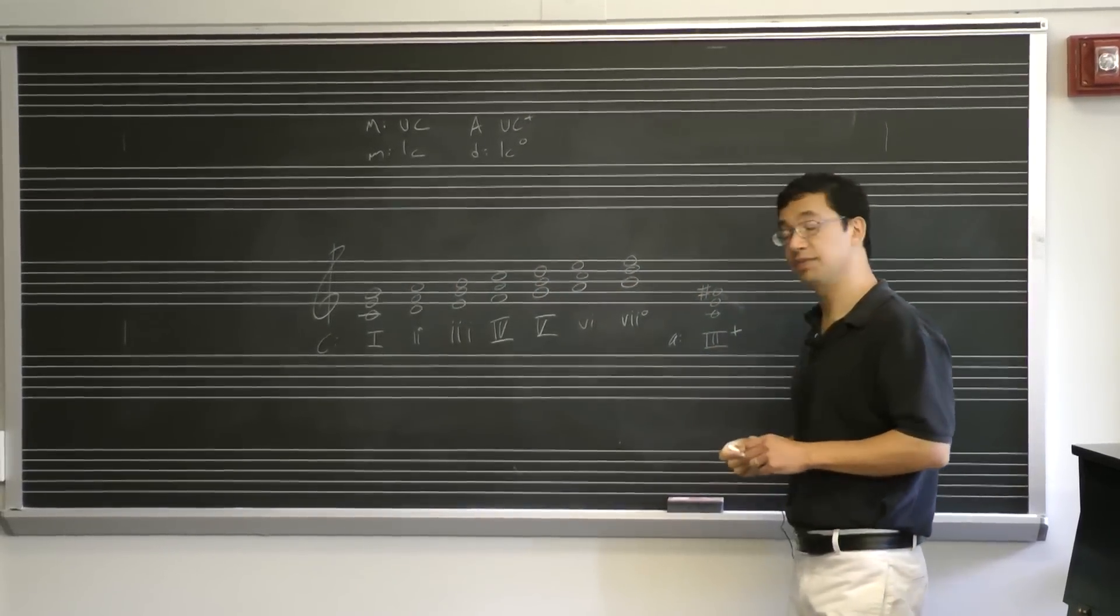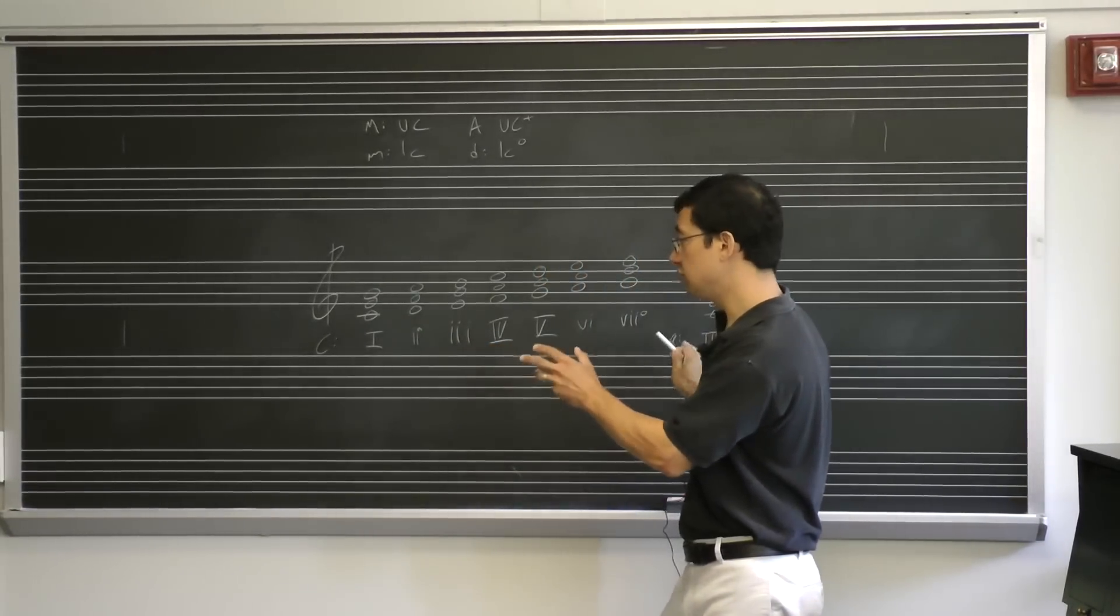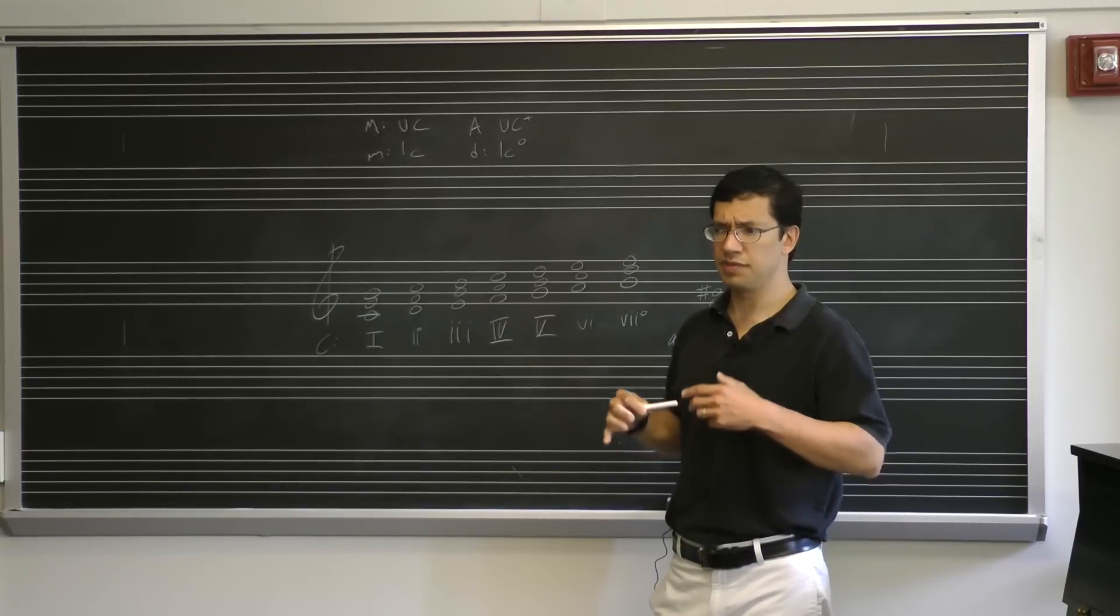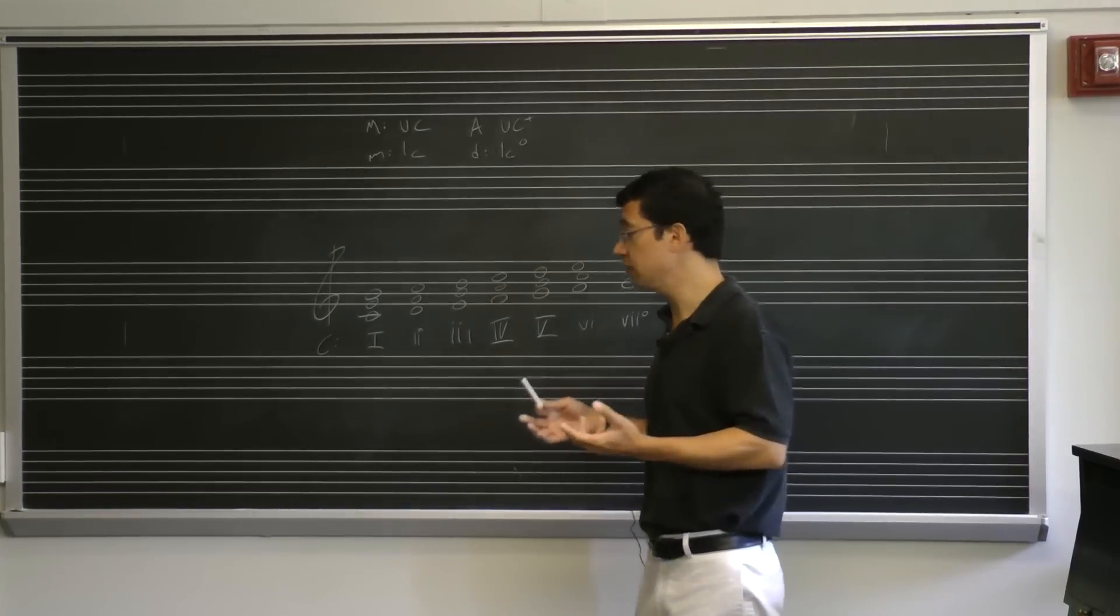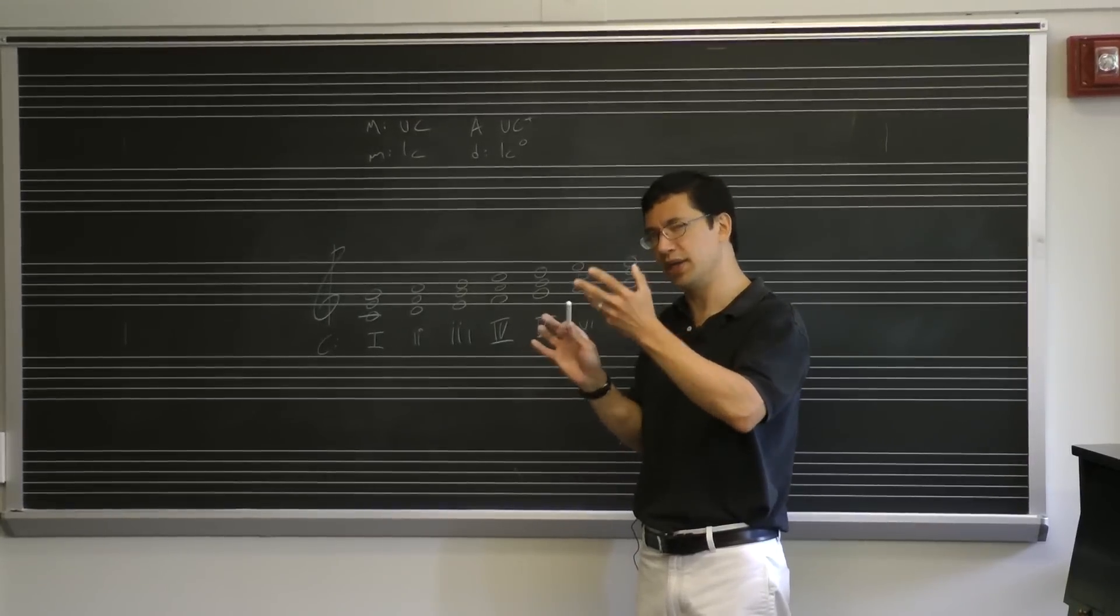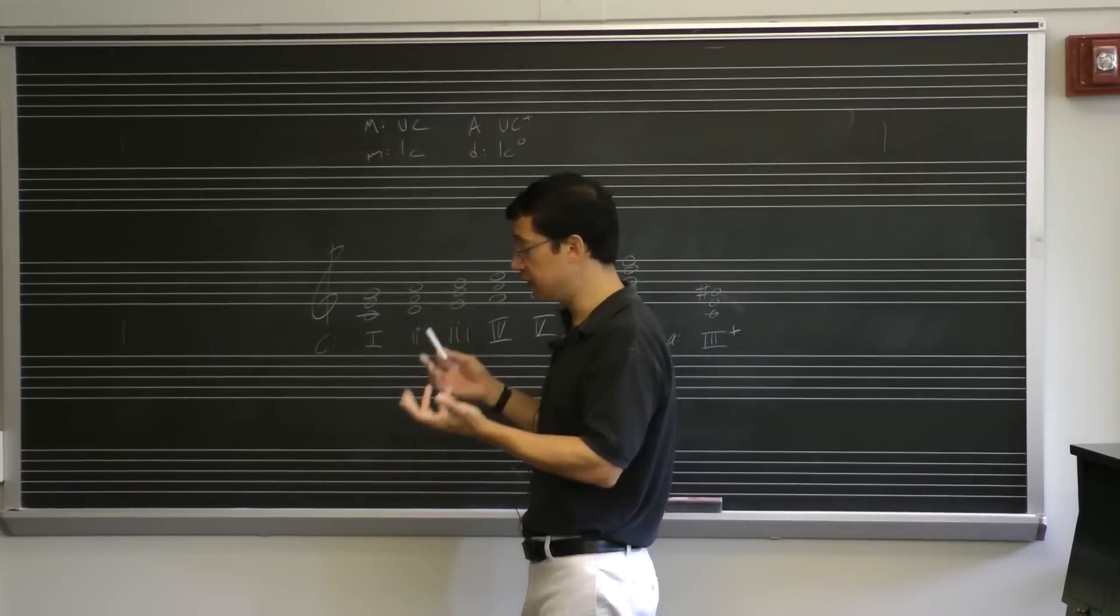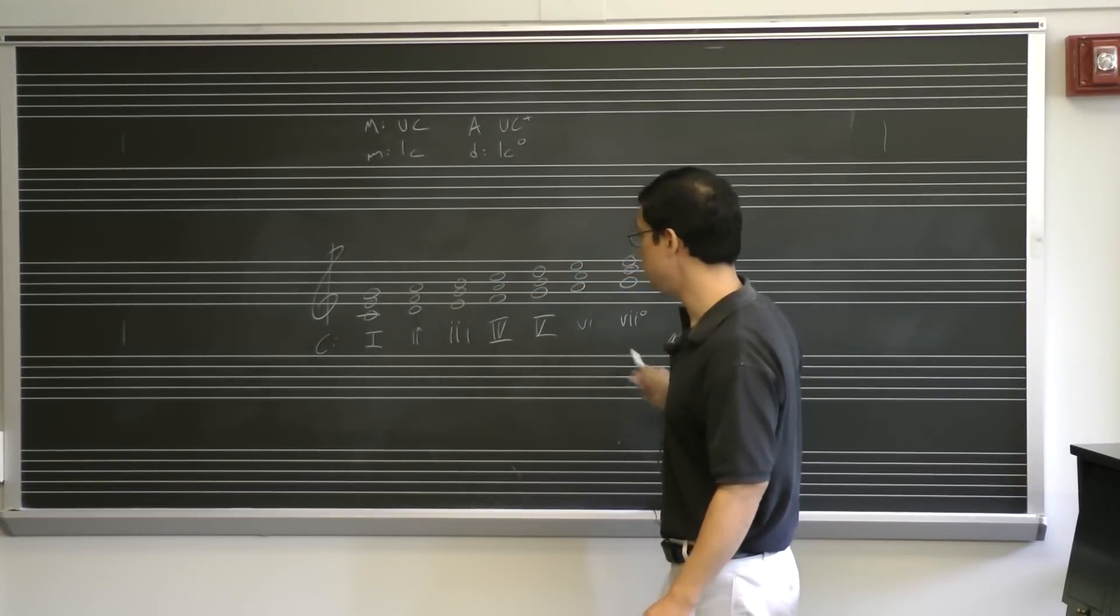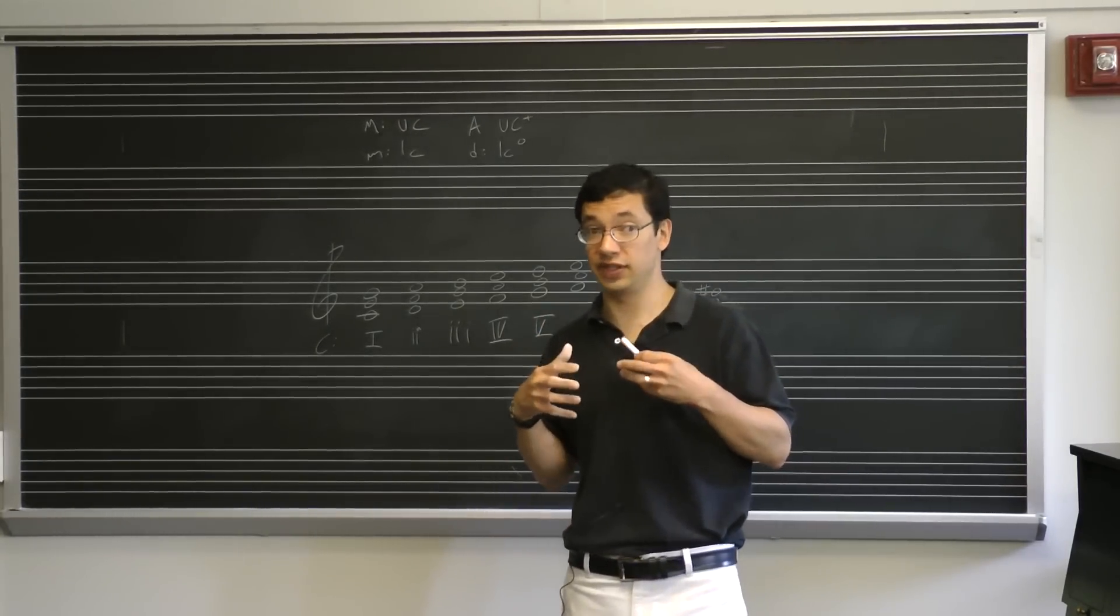This actually points to something very important. This system, these Roman numerals, are often considered one of the main steps in moving toward somewhat more advanced music theory and understanding of harmony. One of the things that you will be able to do, as soon as you can sort out what notes belong to the chord and which notes don't, is take a piece of standard Western music and label all these chords. And I want to caution you at this point, because this can give an illusion of understanding.